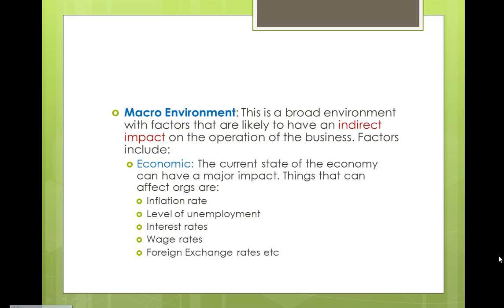The macro environment is the second part of the external environment. It is broad, has an indirect impact on the operation of a business, and the organization has virtually no control over it. The economic environment includes things like inflation rate, level of employment, interest rates, wage rates, and foreign exchange. For example, because the Australian dollar is quite high, the car industry is really hurting — they can't export as many cars as they used to because they're more expensive to other countries.